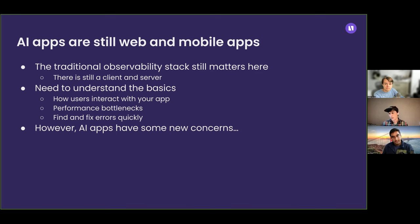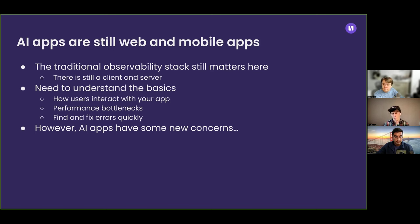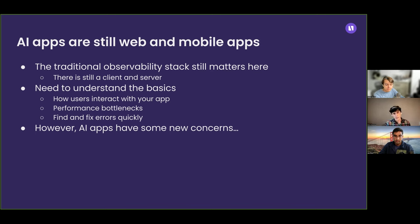An important thing to note here is that AI apps still are web and mobile apps. There still is a client interface that your users are interacting with. You still have a backend that's likely making calls out to your LLM or an API call to an OpenAI backend or something like that. So all of the traditional observability tooling still needs to be in place for the basics of monitoring your application.